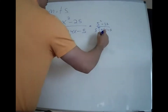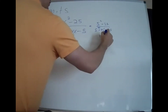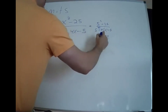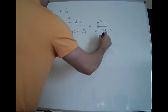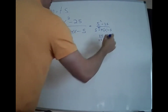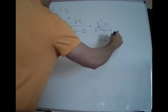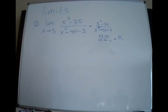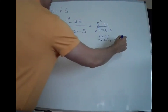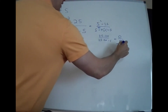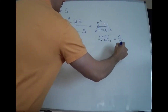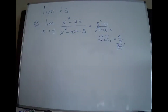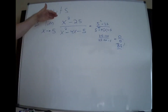On the top, I get 25 take away 25. On the bottom, I get 25 take away 20 take away 5. 25 minus 25 is 0. 25 take away 20 take away 5 is also 0. So this is undefined — zero over zero. That's no good, you can't have this. So I tried to plug in, which is technique one, and it didn't work.